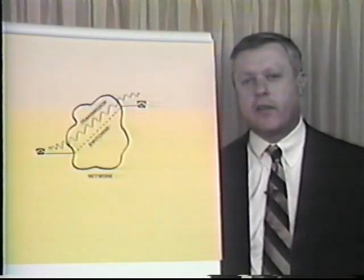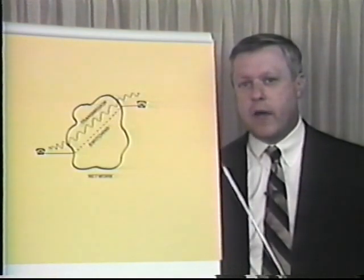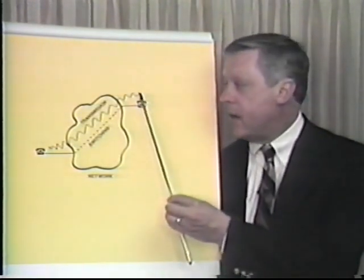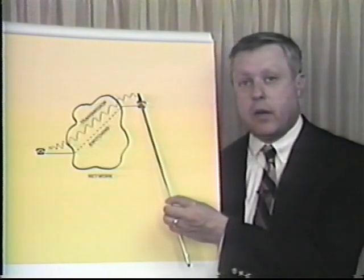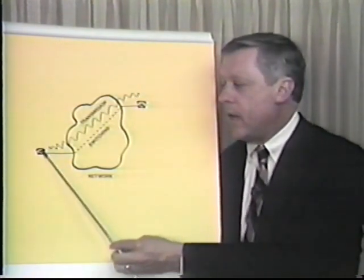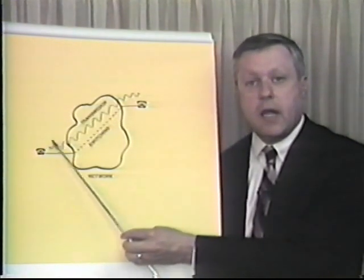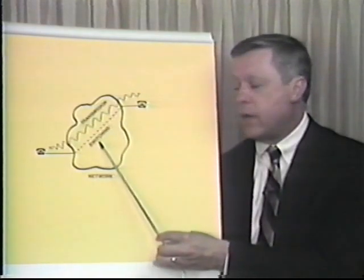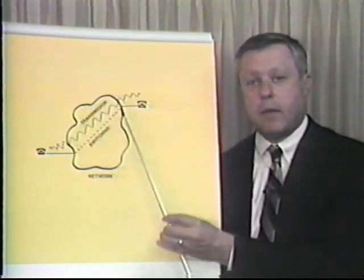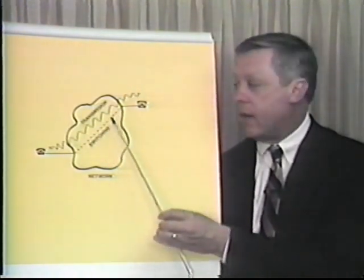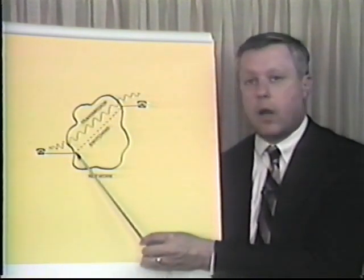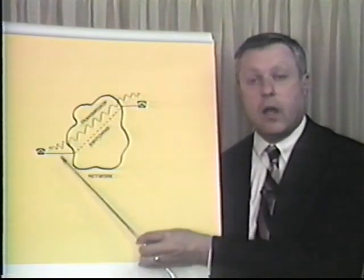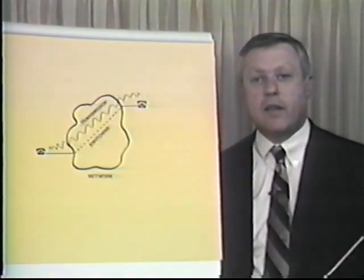This concludes our subsection on transmission. What we've tried to explain is that there are certain standards allowing a signal to be put in at one end of a telephone line, sent through, and picked up at the opposite end so the person can be heard and understood. We also talked about switching — that is strictly connecting the call up — whereas this subsection was about how good the signal is and whether we can hear it at the opposite end.